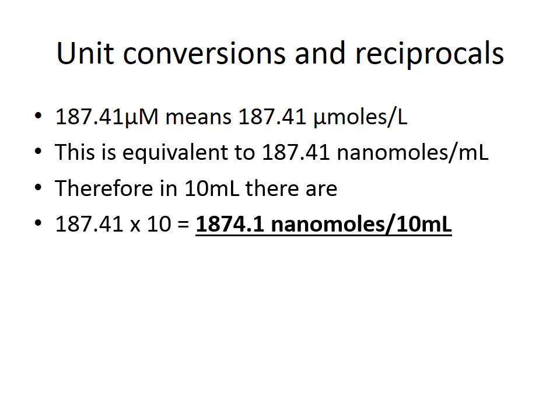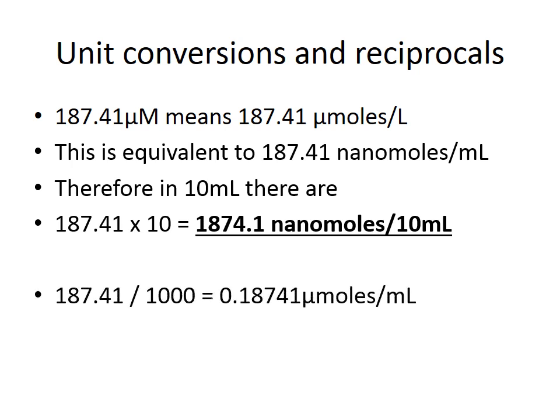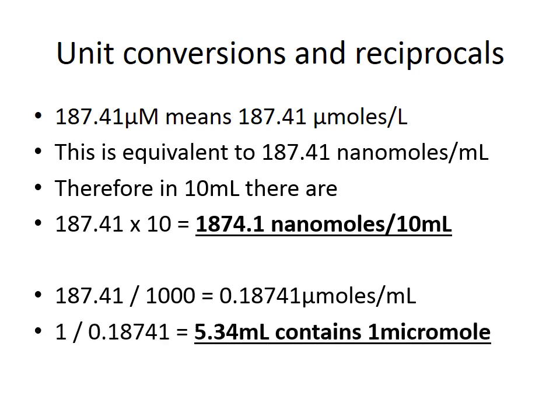The last part of the question asks what volume would contain 1 micromole of adenosine. Converting units: 187.41 micromoles/L ÷ 1000 = 0.18741 micromoles/mL. To find the volume containing 1 micromole, divide 1 micromole by the concentration: 1 / 0.18741 = 5.34 millilitres would contain 1 micromole of adenosine.